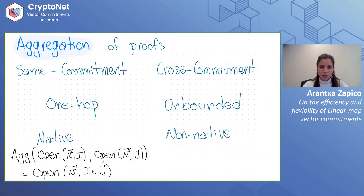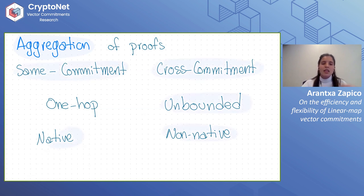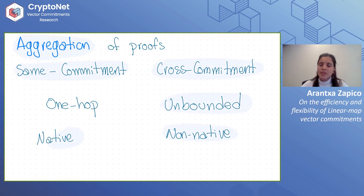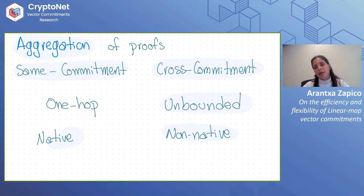So this is what we want to achieve: linear map vector commitments that are updatable and aggregatable. Our result is for same-commitment and cross-commitment unbounded aggregation, though non-native. Other techniques can be applied on top, but our result is a non-native unbounded aggregation for both same-commitment and cross-commitment cases.